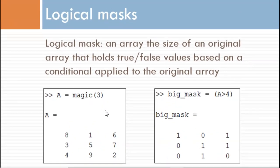we see the original 3 by 3 matrix A holding a variety of values. Then, a conditional statement, A greater than 4, is applied across the entire matrix. This creates a logical mask. Here I named it big_mask.